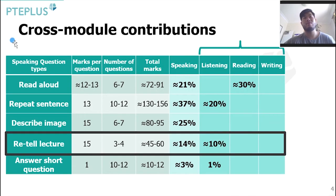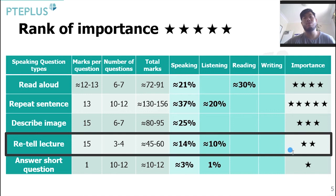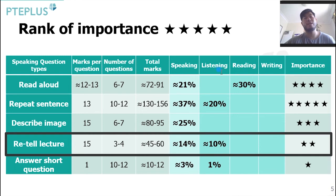Let's have a look at cross-module contributions. We can see here that Retell Lecture questions contribute approximately 10% to your listening score as well. So in total, we give it an importance of two stars, which means it is important to practice, but perhaps not as high as some other sections such as Repeat Sentence and Read Aloud, which contribute 20% and 30% to reading and listening respectively — making those very important.